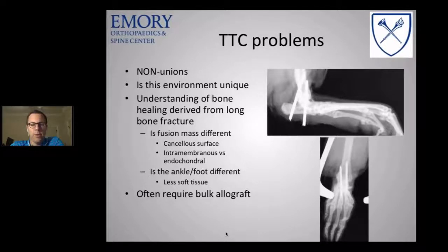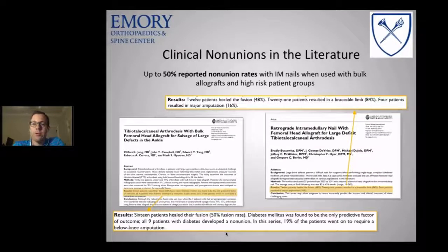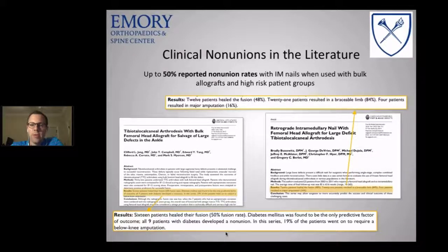We're not sure if healing is intramembranous or endochondral, and whether the neuropathic foot itself is different — less soft tissue, often needing bulk allograft, which is challenging. Non-unions are well-documented. Mark Myerson's study showed about 50% of patients requiring bulk allograft have a non-union, and 20% went on to below-knee amputation. Craig Berlett's group showed only about half their patients fused, with roughly 15–16% going on to amputation with large defects.